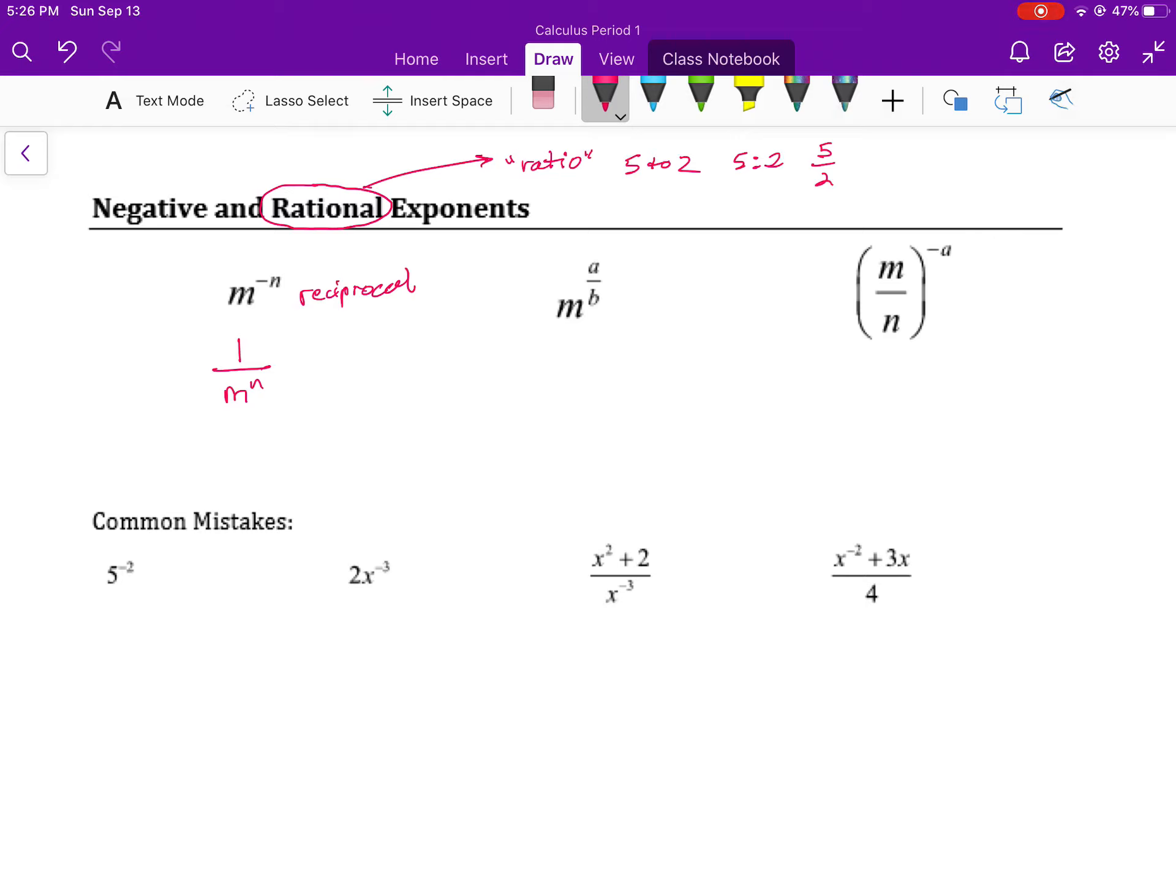For a rational exponent, it's important that we remember that these represent radicals, where the top number is going to be the exponent that's going to be applied to the base, and the bottom number is going to be the index of the radical that we write. So this can be rewritten as the b root of m to the a power. Now that can also be rewritten as the b root of m all to the a power, and which direction you want to go with that can be influenced by the problem that you're solving. So you're going to want to be flexible and comfortable with both of those representations.